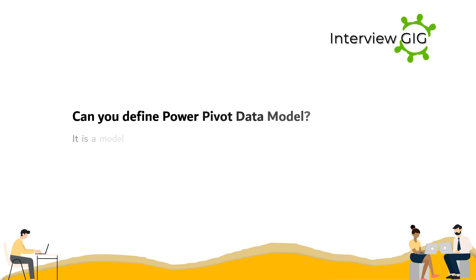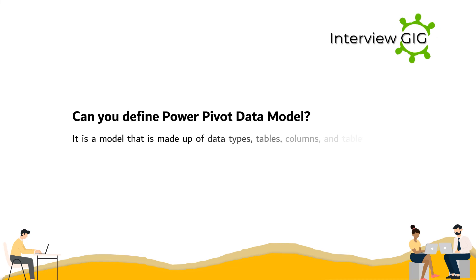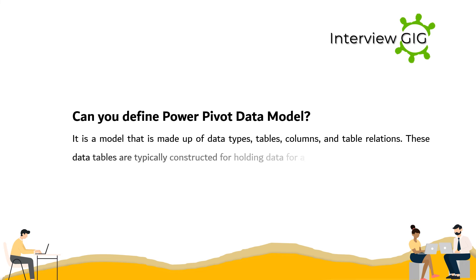Can you define the Power Pivot Data Model? It is a model made up of data types, tables, columns, and table relations. These data tables are typically constructed for holding data for a business entity.